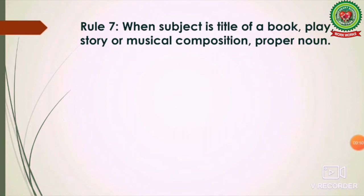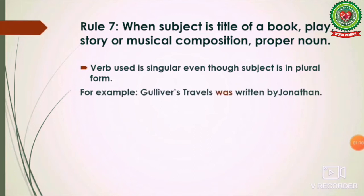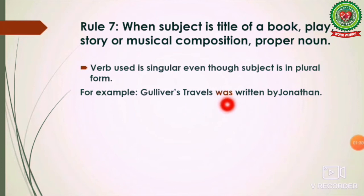The next rule: when the subject is the title of a book, play, story, or musical composition, or a proper noun, even if it is in plural form it is used as singular, and the verb is always singular. For example: 'Gulliver's Travels' is the name of a book. Even though it sounds plural, it is considered a singular subject. 'Gulliver's Travels was written by Jonathan Swift.'